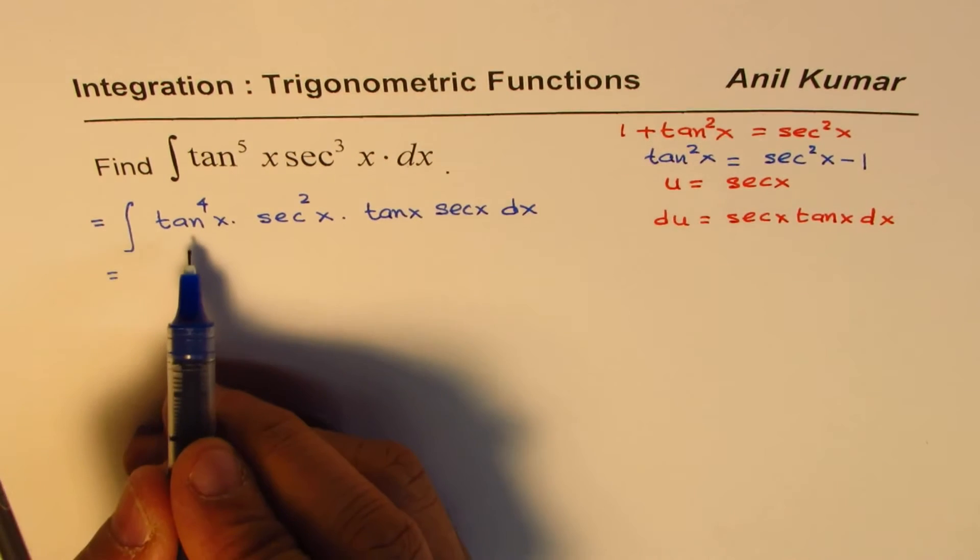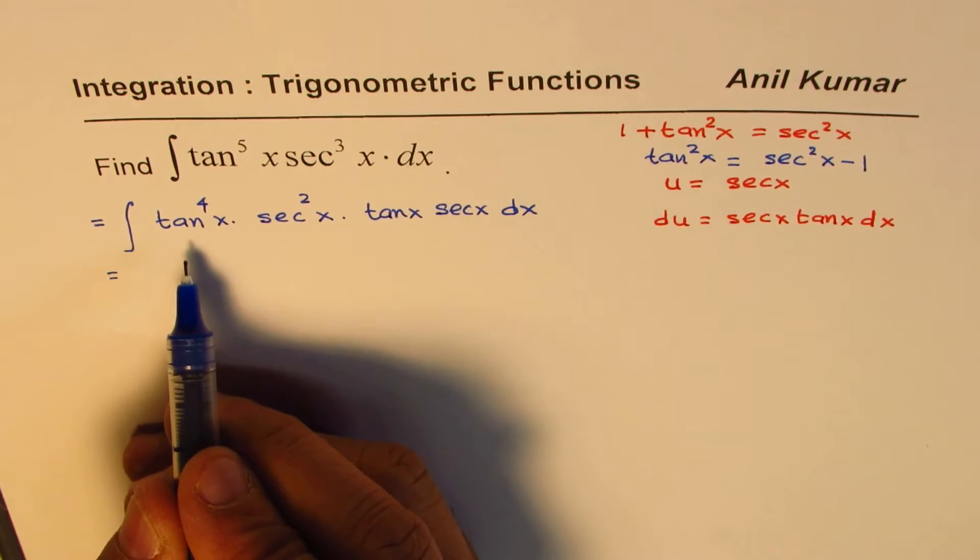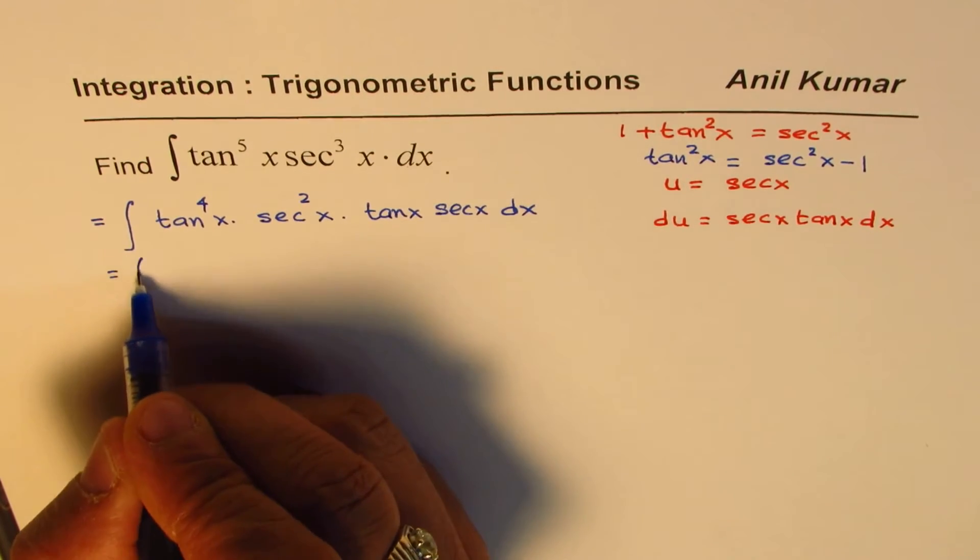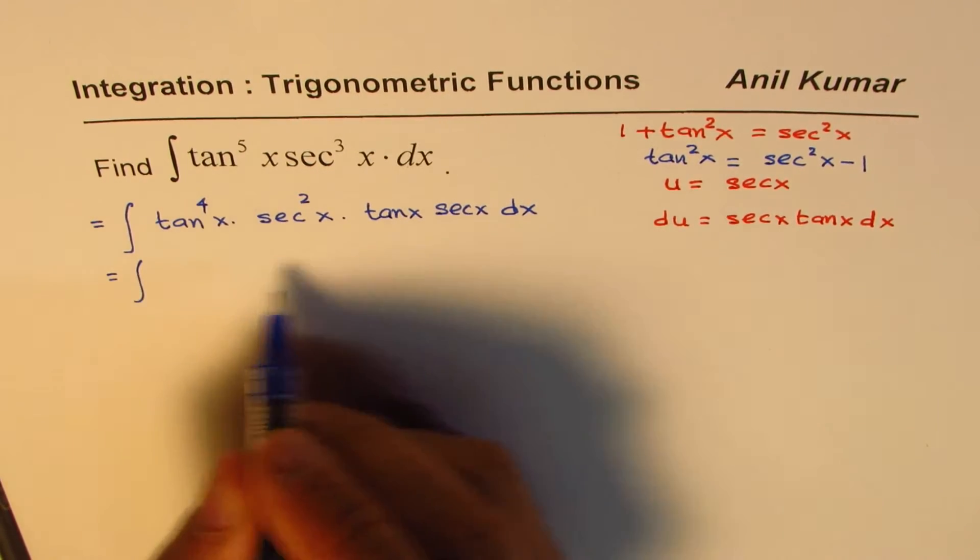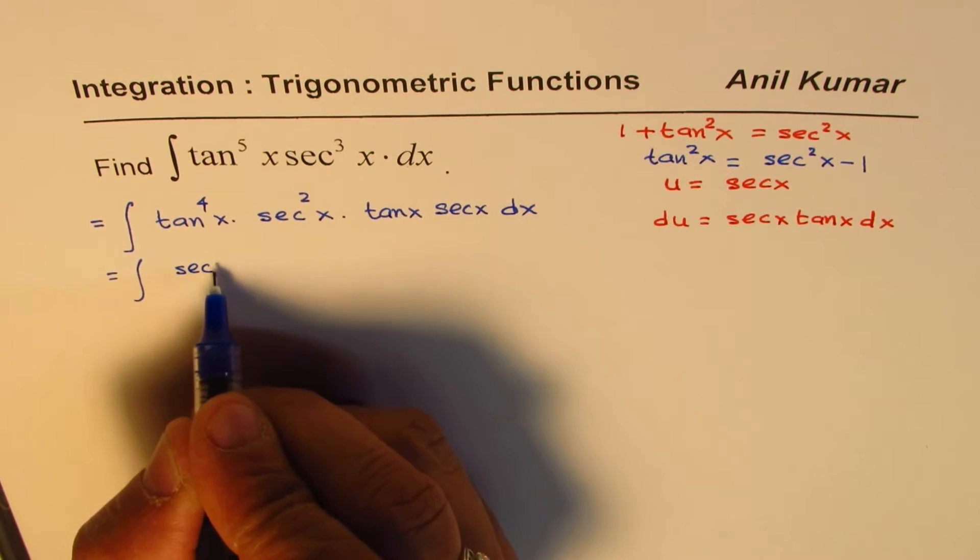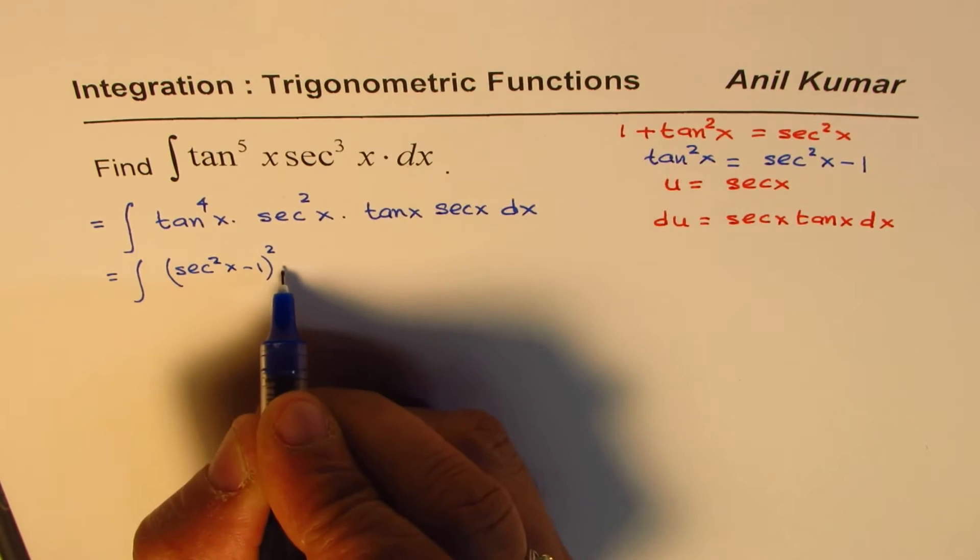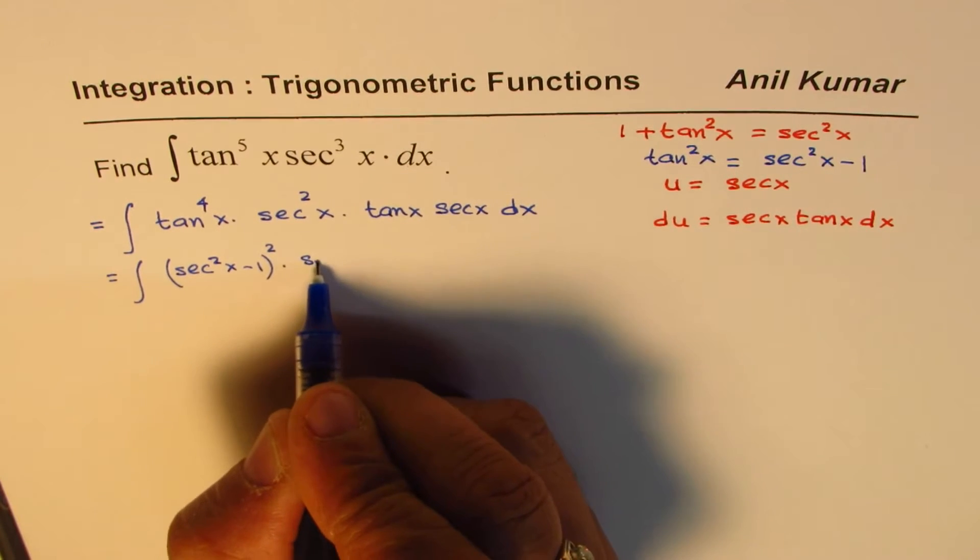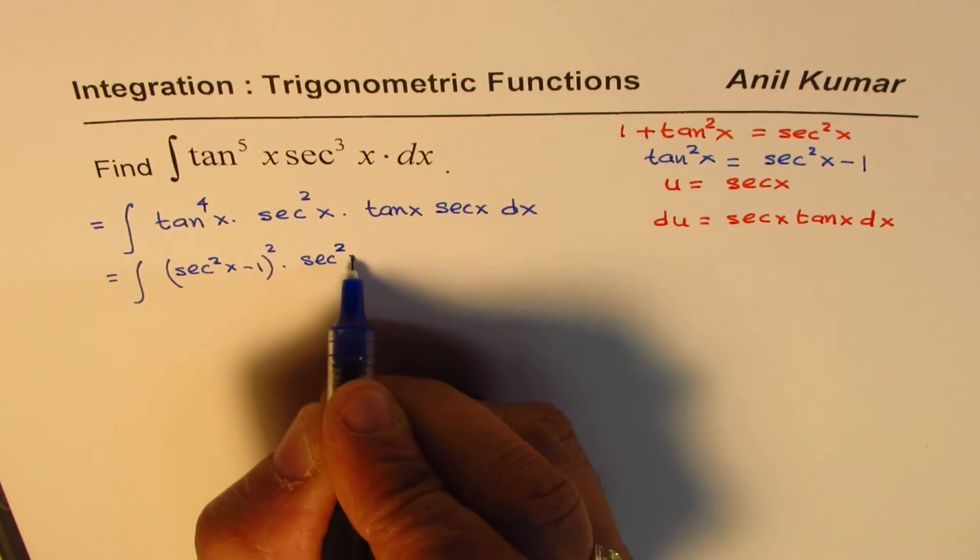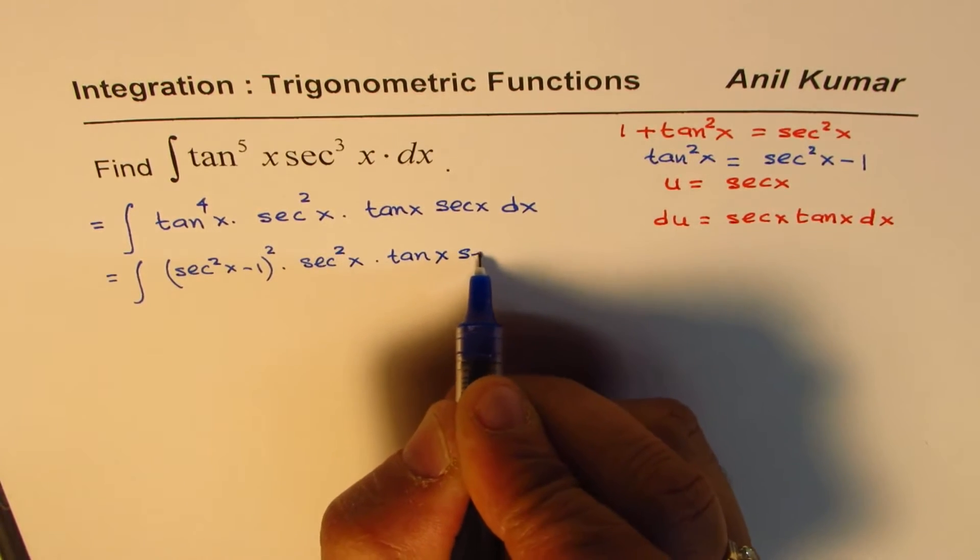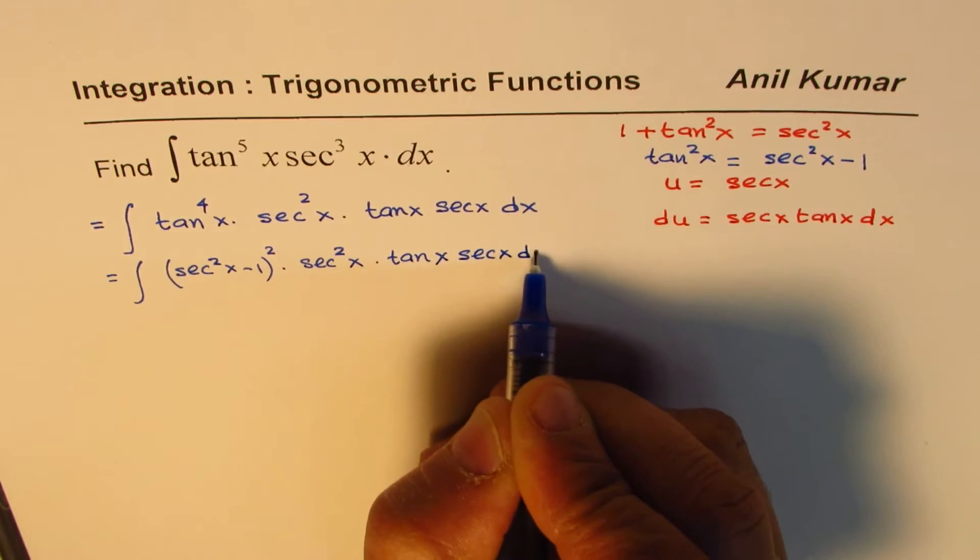Now u is secant x so we do not want tan here so we will replace this tan with secant square x minus 1. So we could write this as tan to the power of 4, tan square, we will write this as secant square x minus 1 whole square times secant square x times tan x secant x. I hope this step is absolutely clear.